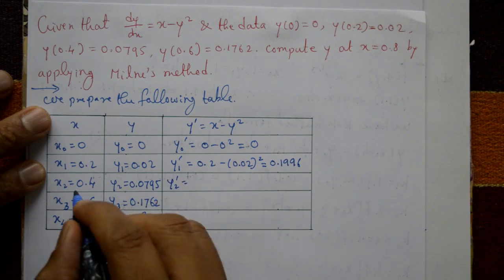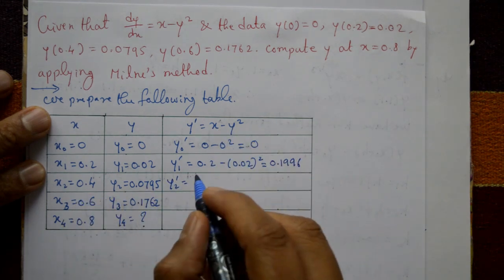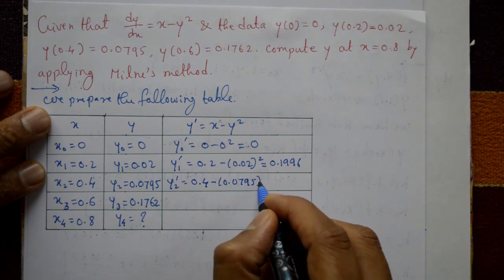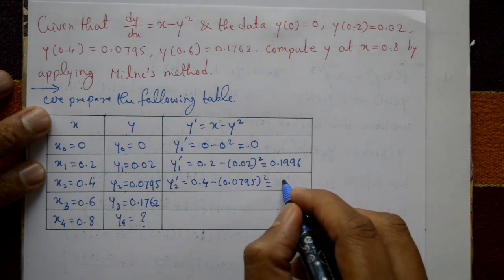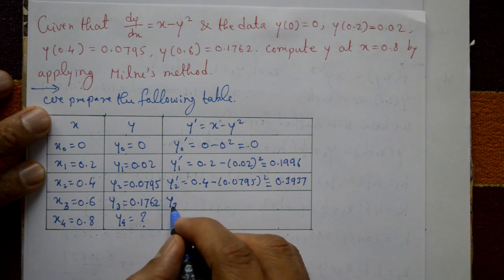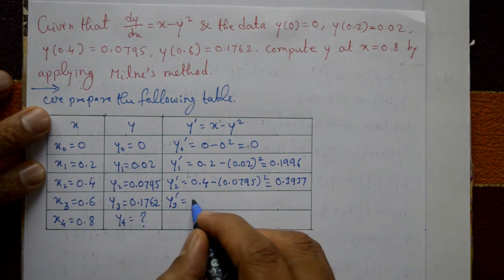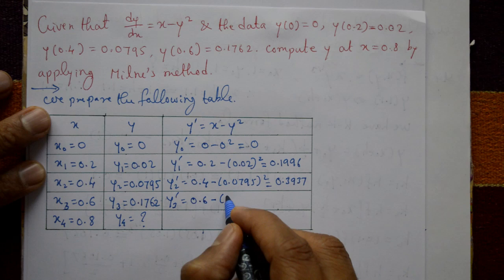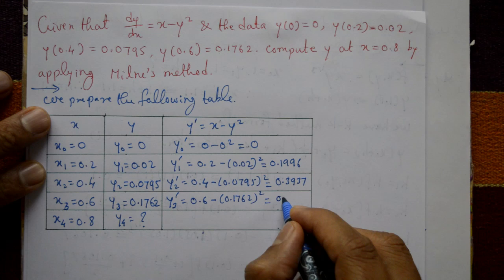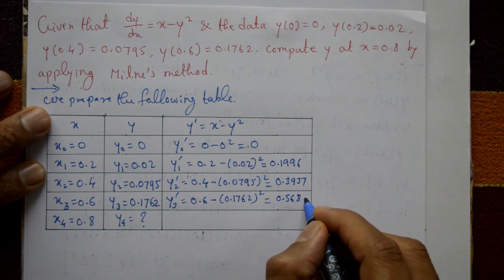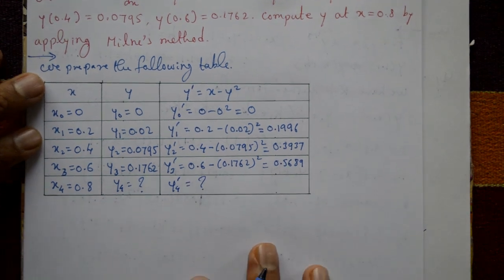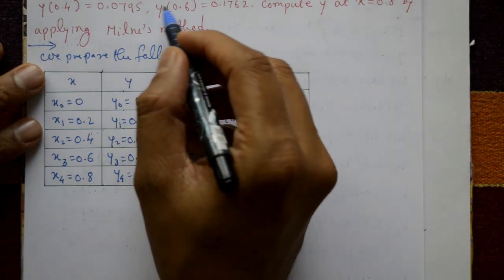Next, y2' = x2 - y2² = 0.4 - (0.0795)² = 0.3937. Next, y3' = x3 - y3² = 0.6 - (0.1762)² = 0.5689. Now we also need to find y4'. Here y' means the first-order, first-degree derivative.